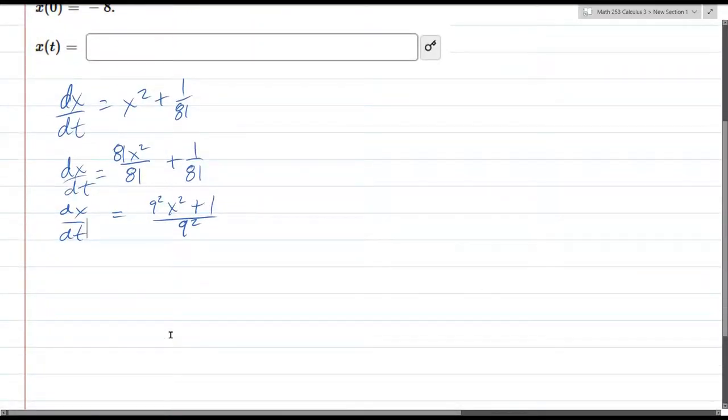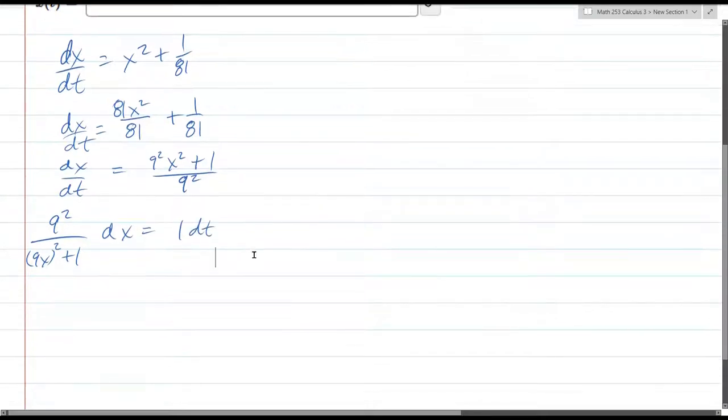So we're going to multiply by the reciprocal of this. That's going to be 9 squared over 9 squared. Let's write it as 9x whole thing squared plus 1 dx equals 1 dt. The right side is super easy, it's just t, and the antiderivative is going to be t.